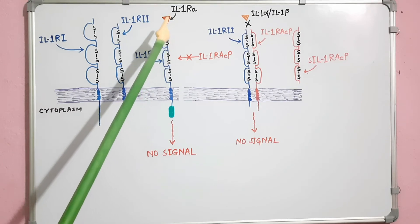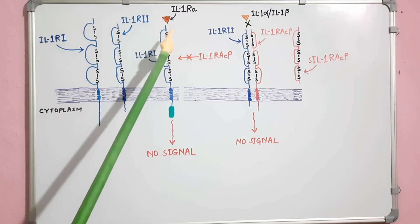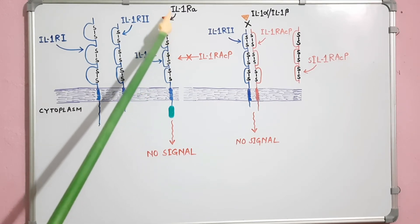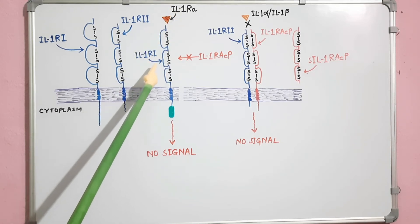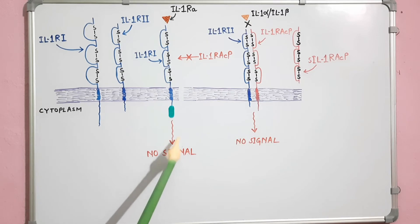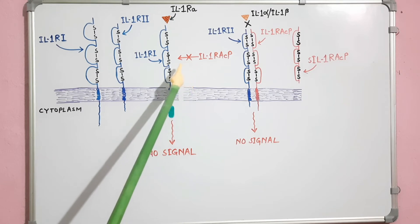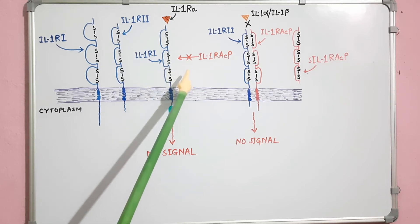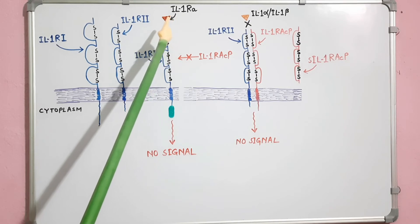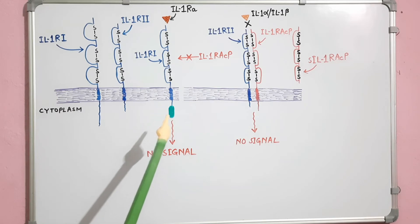IL1RA is an inhibitor to IL-1 alpha and IL-1 beta. When IL1RA binds with IL1R1, no signal transduction occurs because it prevents the interaction between IL1R1 and IL1RACP. In this way, IL1RA acts as an inhibitor to IL-1 alpha and IL-1 beta.